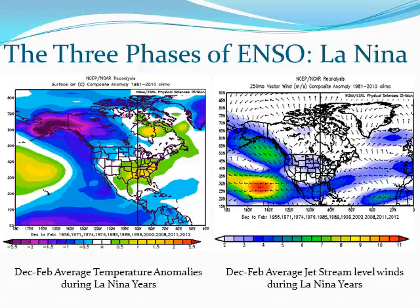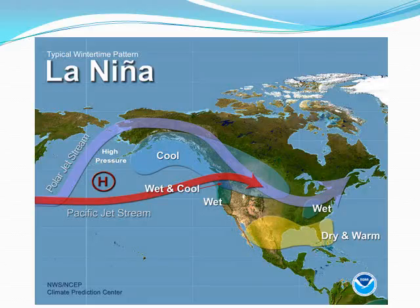The diagram on the right side of the slide shows jet stream level wind anomalies during the same La Niña years. Note that the subtropical jet, which extends from near Hawaii across northern Mexico and the southern U.S., is weaker with easterly wind anomalies. During La Niña years there is a ridge of high pressure in the Gulf of Alaska, which helps to enhance the northwesterly flow around it into western Canada and the northwest U.S. This produces a typical wintertime pattern with the Pacific jet stream pointed further north and a polar jet stream directed southward into the northern parts of the U.S.